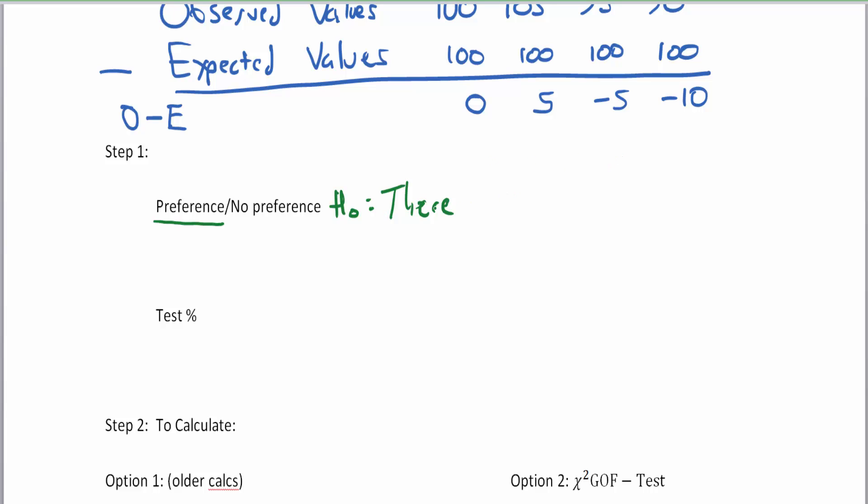So the null hypothesis is there is no preference. The alternative hypothesis which is h sub a or h sub one depending on the book you're using is there is a preference. There is no preference and we would usually state the dependent and independent variable. Also the alternative is there is a preference between the dependent and independent variable.